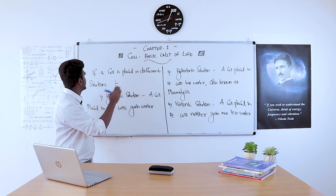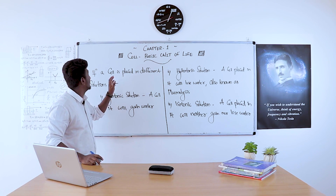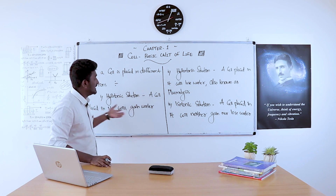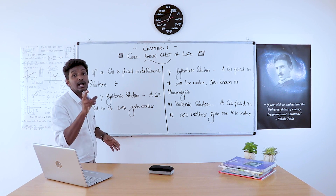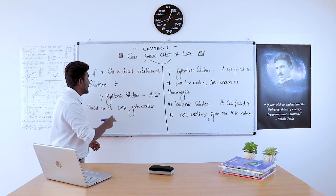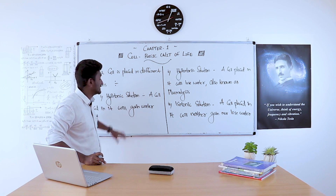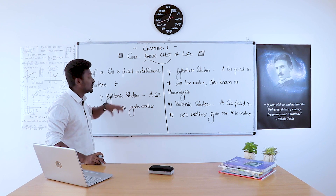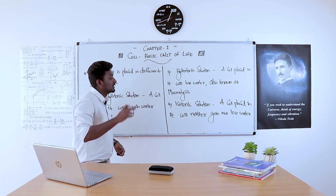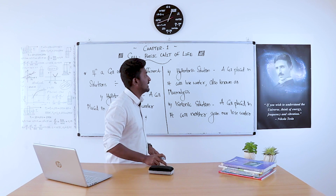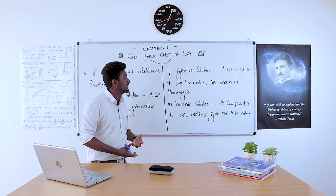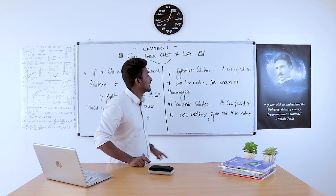Now we look at what happens when a cell is placed in different solutions — hypotonic, hypertonic, or isotonic. When a cell is placed in a hypotonic solution, the cell will gain water. When the cell is placed in a hypertonic solution, the cell will lose water, and that process is known as plasmolysis.